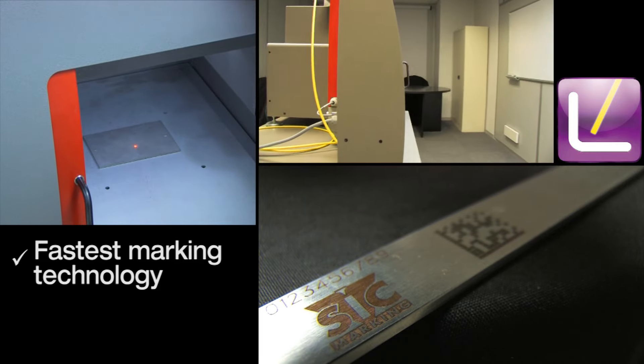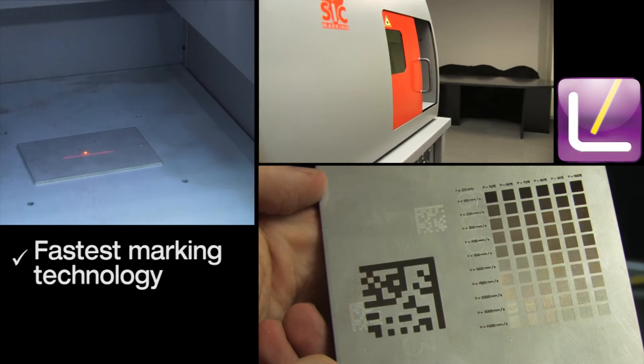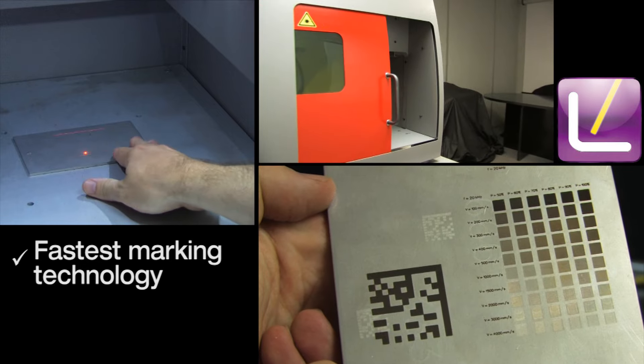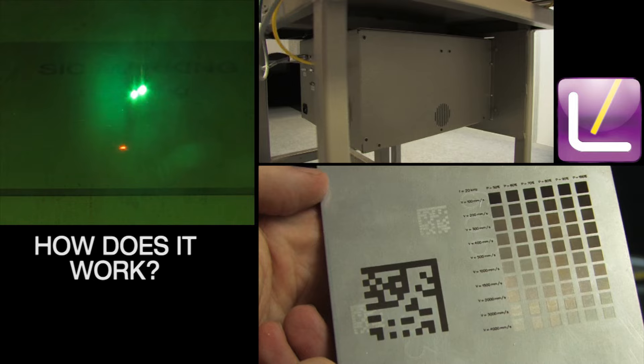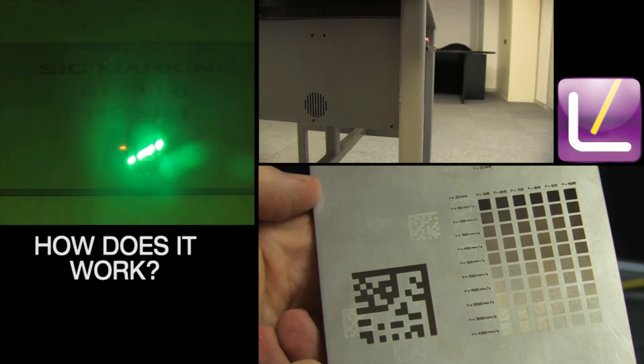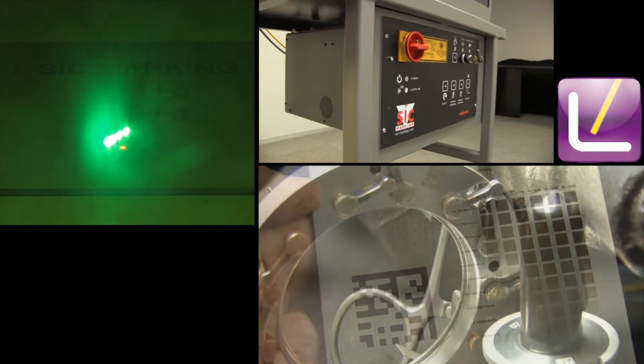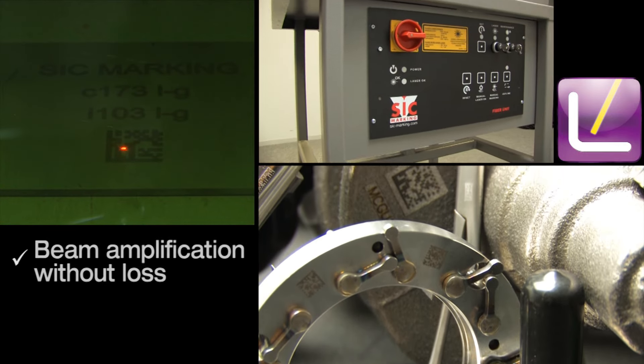How does it work? The laser signal is generated by the laser source and amplified in the optical fiber cable. Then the signal goes through a collimator which aligns the beam and reduces its diameter to 7 mm before entering the galvanometric head.